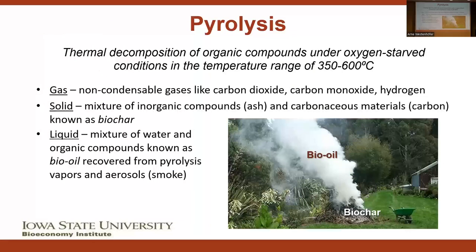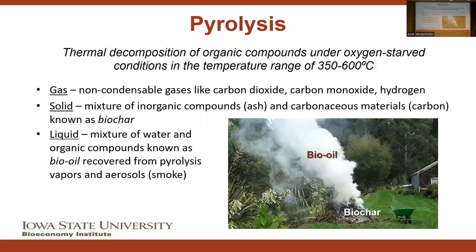Biochar is produced by the thermal decomposition of organic compounds under oxygen-starved conditions, usually in the temperature range of 350 to 600 degrees centigrade. What I would like to emphasize is that this solid known as biochar is not the only product. There is a flammable gas product as well as a liquid product, which in our technology is very important to the economics of the system. Burning green waste in the backyard is a way to produce both biochar and bio-oil, the white smoke representing an aerosol of fine liquid droplets that we capture and get economic value from.